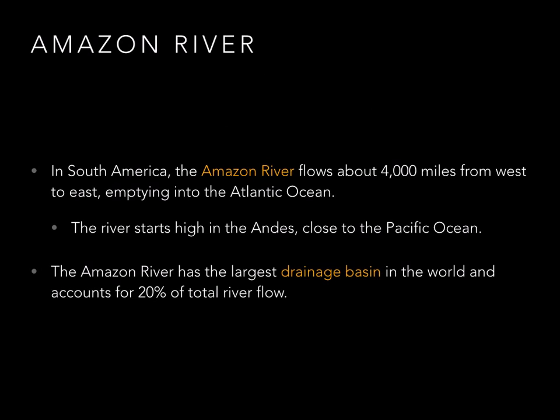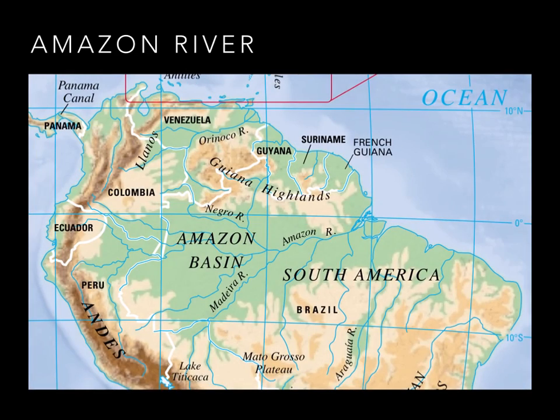Another important physical feature of the continent is the Amazon River. It flows 4,000 miles from the west all the way across South America to the east, emptying into the Atlantic Ocean. It starts high up in the Andes, which at that point are very close to the Pacific. The Amazon River has the largest drainage basin in the world, accounting for about 20% of the total river flow in the whole world. This is an equatorial region near the equator, so there's lots of rain and it's very wet.